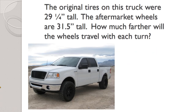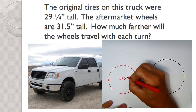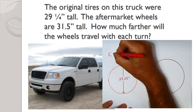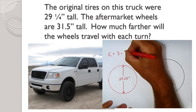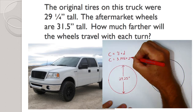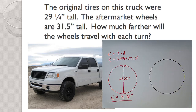The original tires on this truck were twenty-nine and a quarter inches tall. We took them off and put on some aftermarket rims and tires that are thirty-one and a half inches tall. The question is how much farther will we travel every time those wheels turn just because we put on bigger tires? Our original tires were twenty-nine point two five inches in diameter. So C equals pi times diameter — that's 3.1416 times 29.25 — which rounds to ninety-one point eight nine inches. That's how far the original wheel will travel every time it turns.